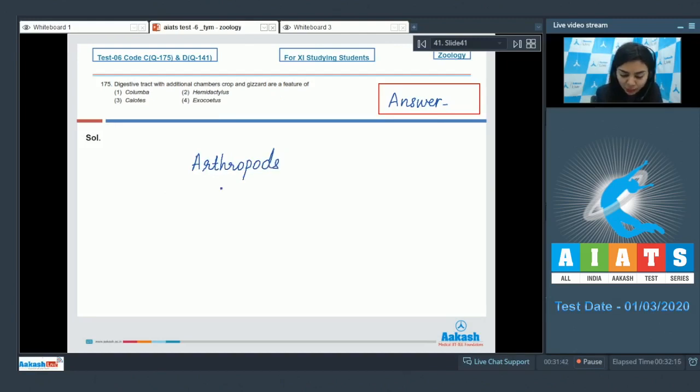For example, it's also seen in cockroach and it is also seen in birds. The crop is used for storage of food and gizzard helps in grinding of the food material. Option one, Columba comprises species of pigeons. This is the right answer, belongs to class Aves, it possesses crop and gizzard. Option two, Hemidactylus is a reptile. Calotes is a lizard and Exocoetus is flying fish. They do not have crop and gizzard. The correct answer is option number one.